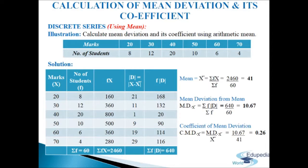Computing f·d: 8×21=168, 12×11=132, 20×1=20, 10×9=90, 6×19=114, 4×29=116, giving sigma f·d = 640. Mean deviation from mean MD(x) = sigma f·d / sigma f = 640 / 60 = 10.67.